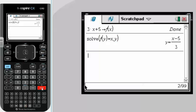hit enter, what you see is the inverse of the original function. So y equals x minus 5 over 3 is the inverse of the original function y equals 3x plus 5.